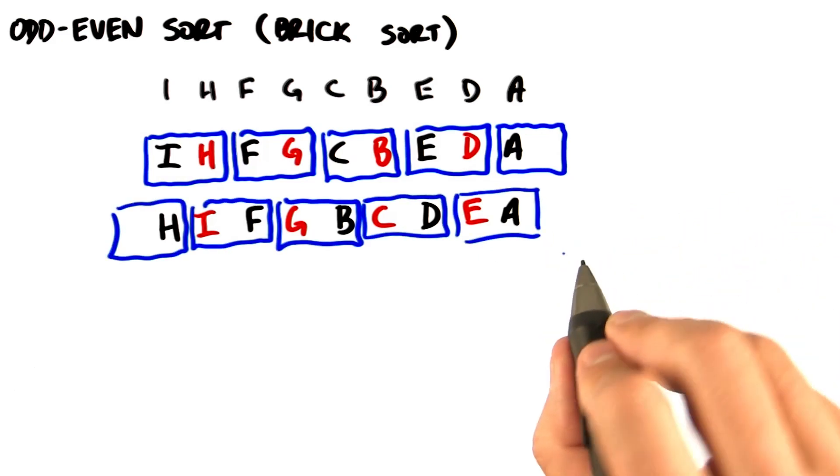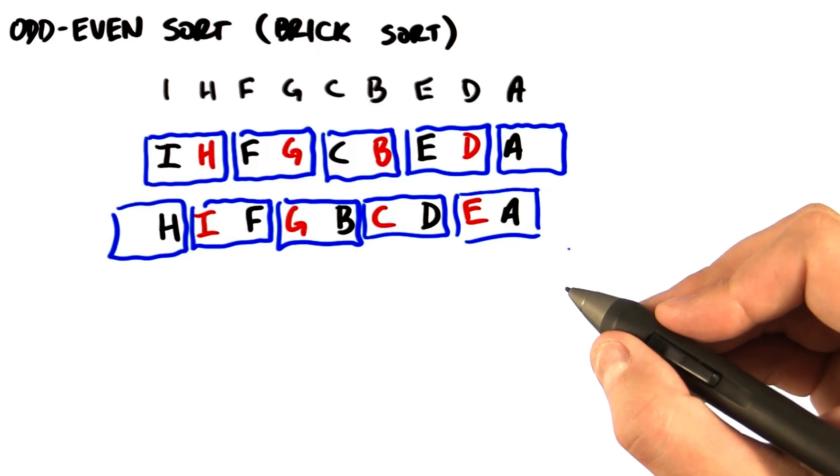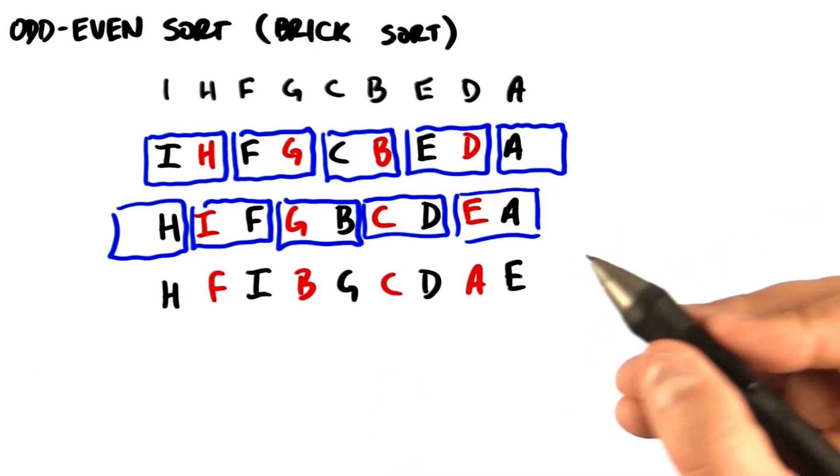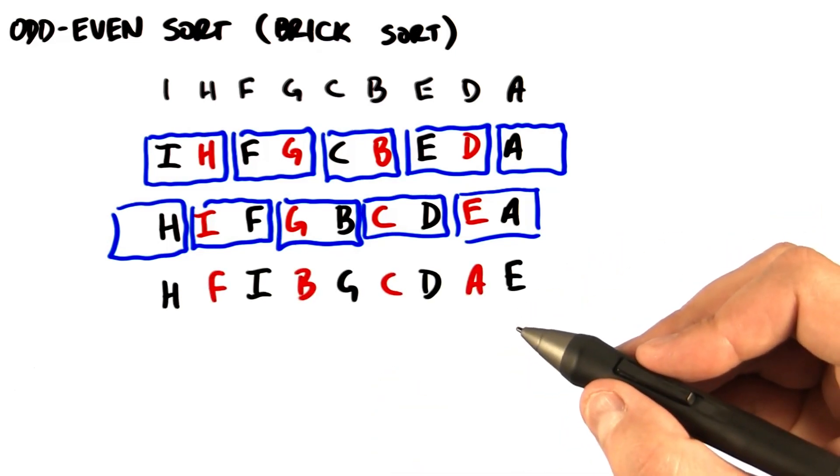Now, every red element turns around, faces to its right, and pairs up with the black element in the other direction. Again, they swap if they're out of order. So we continue until the sequence is sorted.